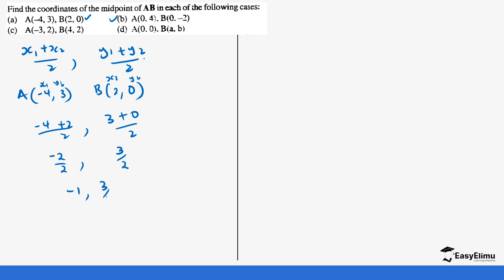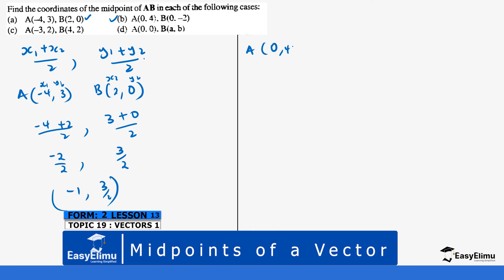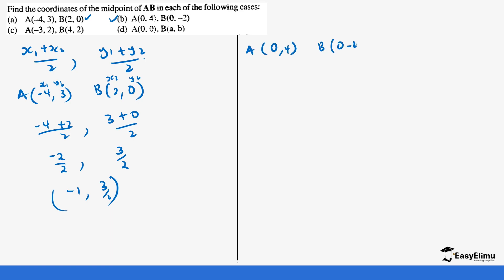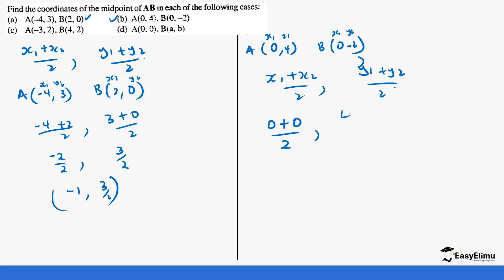For the second example, A = (0, 4) and B = (0, -2). So X1 = 0, Y1 = 4, X2 = 0, Y2 = -2. Applying the formula: X1 plus X2 over 2 is (0 + 0)/2 = 0, and Y1 plus Y2 over 2 is (4 + (-2))/2 = 2/2 = 1. So the answer is (0, 1).